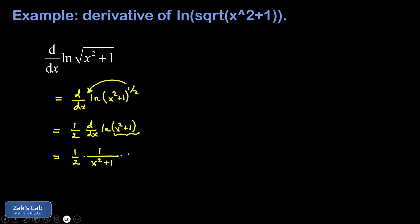And then the chain rule says we have to tack on the derivative of the interior function, which is two x here. And these twos are going to cancel. And we're left with x over x squared plus one.